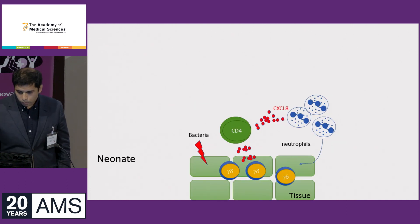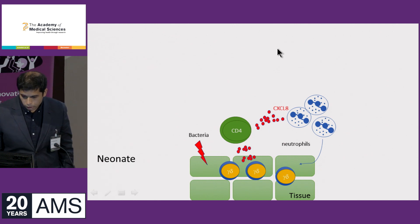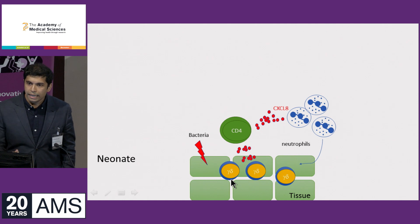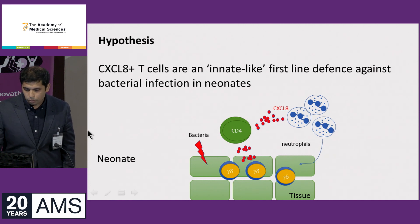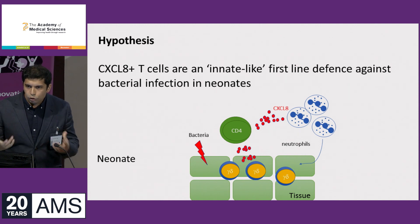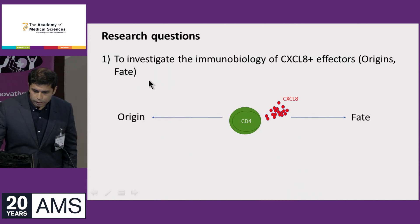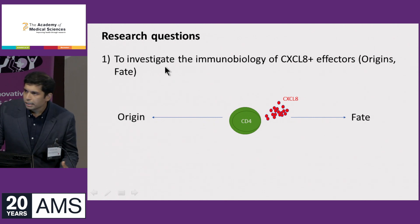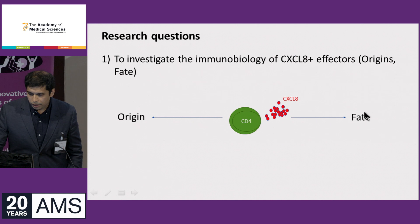So what does CXCL8 do? We know that it activates neutrophils and attracts them to sites of infection. We also know that it activates gamma-delta T-cells, which live at epithelial surfaces and sense stress. So perhaps a hypothesis is that these T-cells, which are in abundance, are your first innate-like defense against infection — your paramedics or first responders — prior to your adaptive immune responses developing. To test this, we first need to understand the biology of these cells: where they come from, their thymic origins, and what happens to them, because we don't see many in the adult.